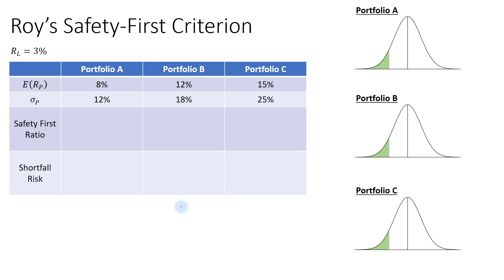Let's look at an example with three portfolios: A, B, and C. Portfolio A has the lowest return and lowest volatility, up to Portfolio C with the highest return and highest volatility. The investor's minimum acceptable return is 3%. We will compute the Safety First Ratio for each. For Portfolio A, the SFR is 8% minus 3% divided by 12%, giving approximately 0.42.